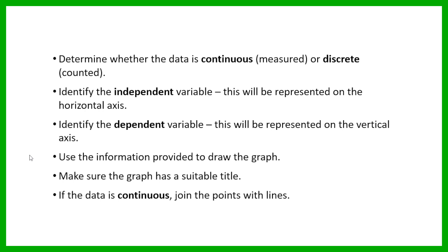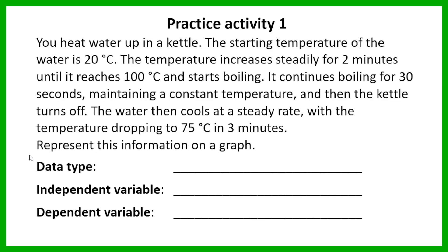So let's have a look at the first example. You heat water up in a kettle. The starting temperature of the water is 20 degrees Celsius. The temperature increases steadily for two minutes until it reaches 100 degrees Celsius and starts boiling. It continues boiling for 30 seconds maintaining a constant temperature, and then the kettle turns off. The water then cools at a steady rate, dropping to 75 degrees Celsius in three minutes. Represent this information on a graph. The first thing you need to do is determine what type of data we're working with — is it continuous or discrete?